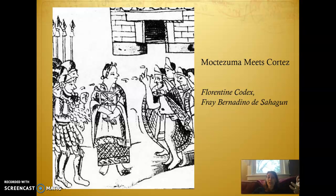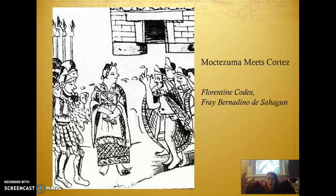This is from the Florentine Codex — an actual drawing that would have been included in the 1570s version of the Aztec source, attributed to a Spanish missionary named Bernardino de Sahagún, the Roman Catholic monk in charge of this project. What we have here is La Malinche, the woman in the middle, who is represented in quite a few of the Aztec sources.